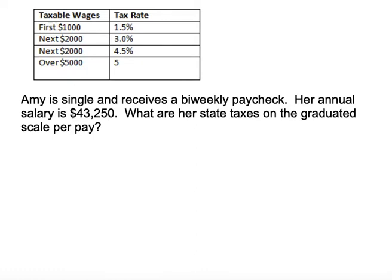We're going to use a generic table today that walks us through four different tiers. If you only make $1,000 in the year you're only going to be situated on tier one. If you make $3,000 then you're going to jump to the next tier. Every time you go over $5,000 you're going to be at that five percent tier, but you're still going to utilize the three tiers below it.